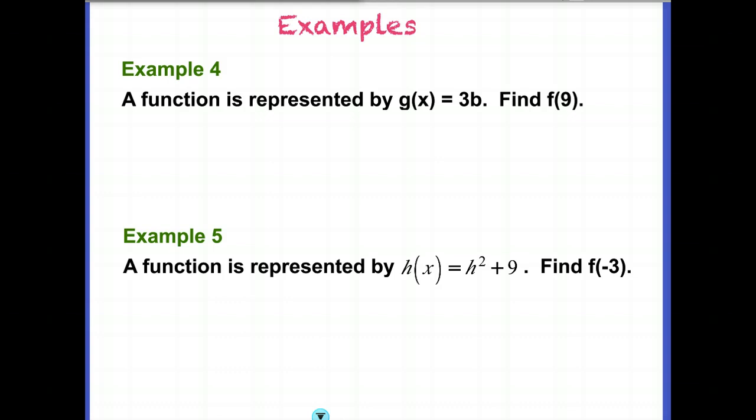So we want to make sure, and this is a good example of what we should find. We will not have 3b here because it says that our independent variable is x. So what this should say is 3x.